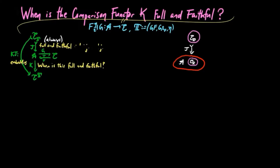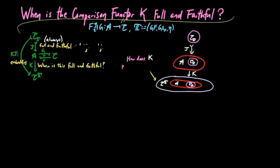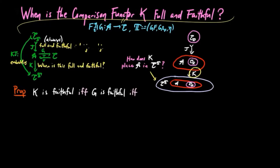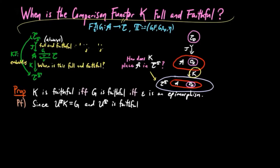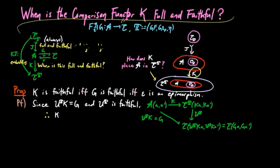The restriction of K to the image of the Kleisli category in A is also an embedding, but we ask how K places the category A in the Eilenberg-Moore category. We start with the criterion of faithfulness: K is faithful if and only if G is faithful, if and only if the co-unit of FG is an epimorphism. To prove this, since UTK is equal to G and UT is faithful, the following diagram shows that K is injective on Hom-sets if and only if G is injective on Hom-sets. We have already shown that G is faithful if and only if the co-unit is an epimorphism, and so that completes this proof.